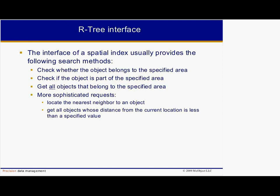The interface of an R-Tree usually provides the following search methods: all objects that belong to the specified area — more formally, whether the object's minimum bounding rectangle overlaps with the specified rectangle; whether the object's minimum bounding rectangle is wholly contained within the specified rectangle; and get all objects whose minimum bounding rectangles overlap with the specified rectangle. These operations can be used to implement more sophisticated requests, for example, to locate the nearest neighbor to an object, or to get all objects whose distance from the current location is less than a specified value.